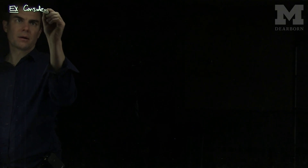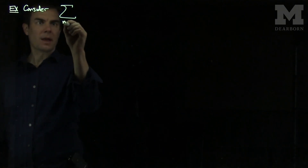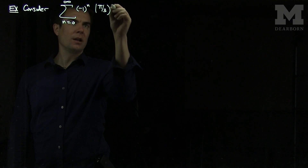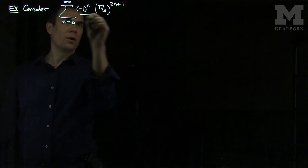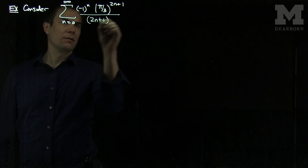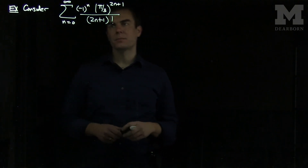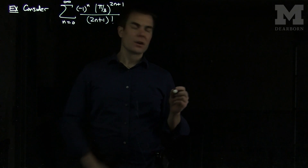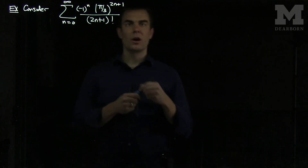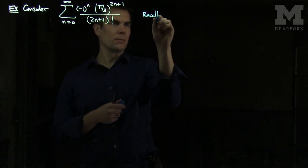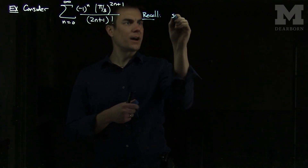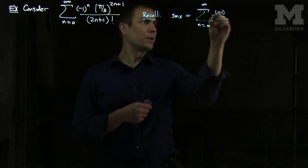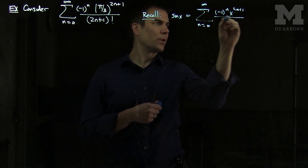Let's consider the sum, n goes from 0 to infinity of negative 1 to the n, pi over 3 to the 2n plus 1, over 2n plus 1 factorial. We want to evaluate this infinite series. We can observe that what we have here — we can recall that the sine of x is the sum, n goes from 0 to infinity of negative 1 to the n, x to the 2n plus 1, over 2n plus 1 factorial.